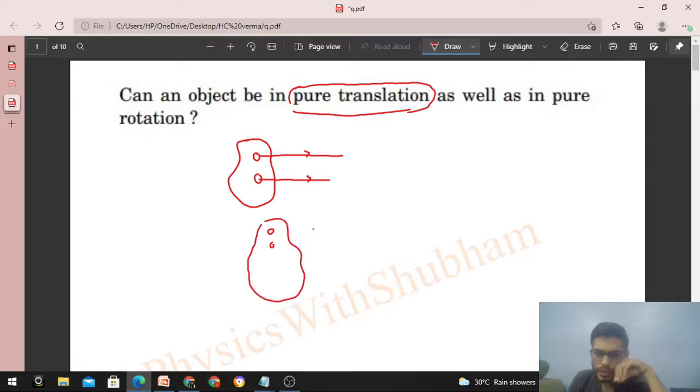Now, what about pure rotation? If this body is in pure rotation and I take any two points, then they will move in concentric circles. That will be a curved path. So an object cannot move in a straight line and in a curved path simultaneously.